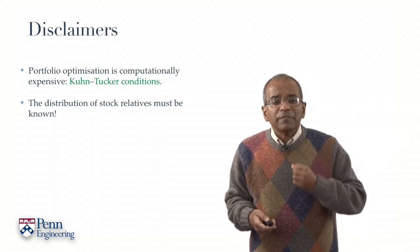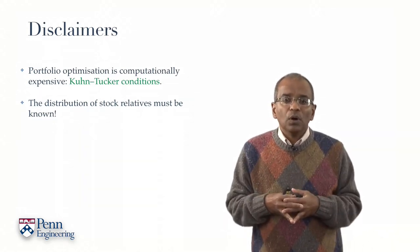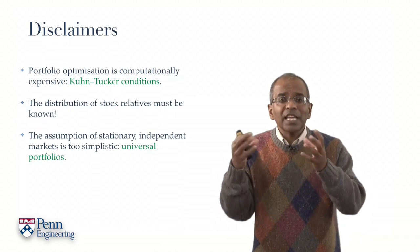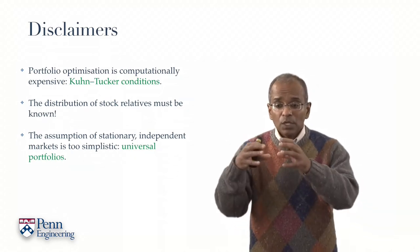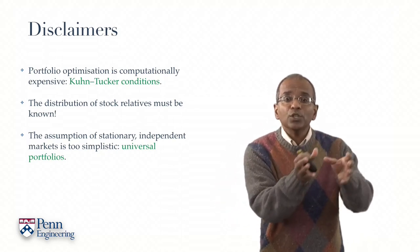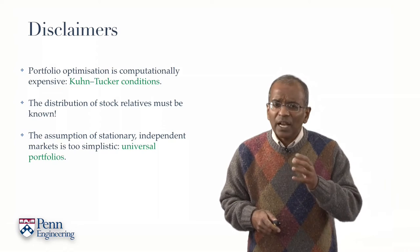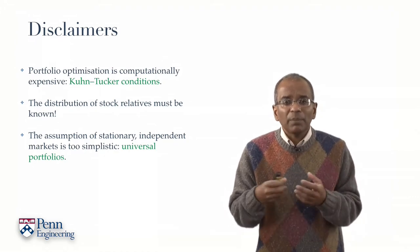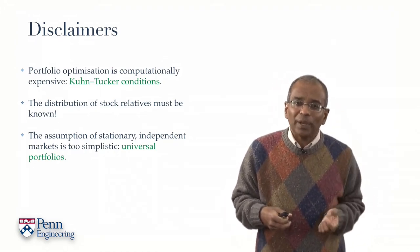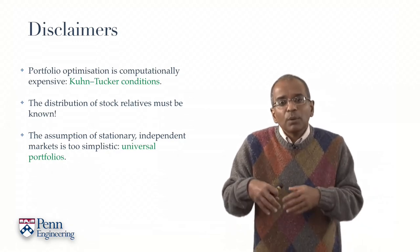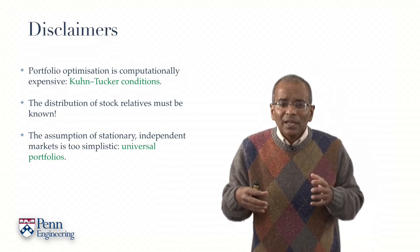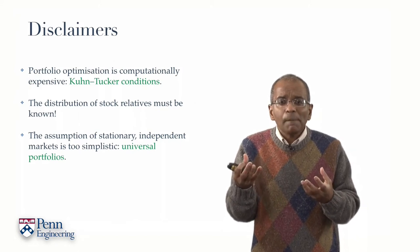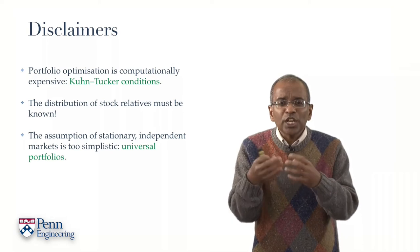But even if we thought we knew the chance law, there's a further objection. And that is that the assumption that the market is stationary, stochastically speaking. In other words, you've got a chance law which does not change from day to day. This is highly unrealistic. Of course, stock movements on a given day inform what's going to happen the next day. If you're in a bear market, then stock prices are generally dropping before they bottom out and start rising. If you're in a bull market, stock prices are generally rising. It is too simplistic to assume that the laws are stationary in time. They don't change in time.